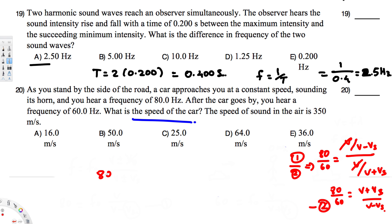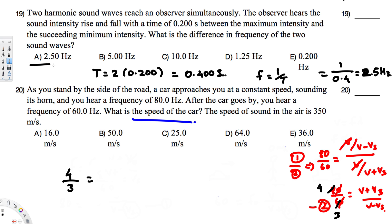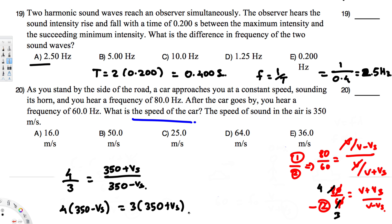Simplifying 80 over 60 gives us 4 over 3. Substituting v = 350 m/s: 4/3 = (350 + v_source) / (350 − v_source). Cross-multiplying: 4 × (350 − v_source) = 3 × (350 + v_source), which gives 1400 − 4v_source = 1050 + 3v_source.